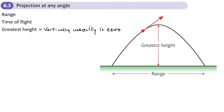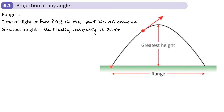The time of flight is just how long the particle is in the air. If you see that phrase, it means how long is the particle airborne. The range is the horizontal distance from the point of projection to the point of landing — that is, when the particle hits the ground again. So range equals horizontal distance from point of projection to landing point.